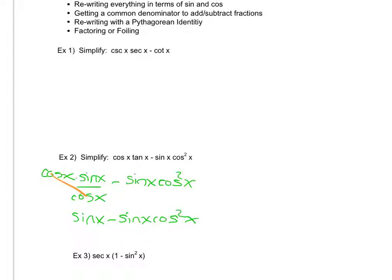The next thing I notice is that both of these terms — this first term and this second term — have a common factor. They both contain a sine. So I'm going to go ahead and try factoring that sine x out, which is going to leave me with sine x times the quantity one minus cosine squared x.